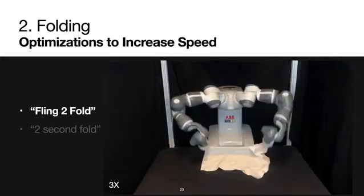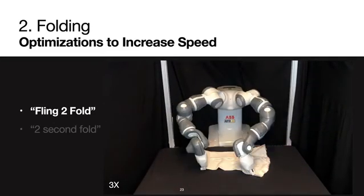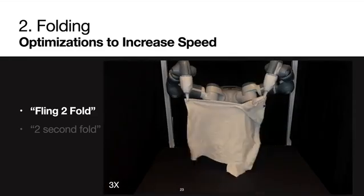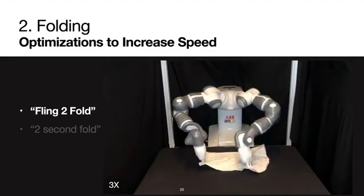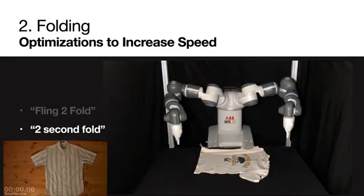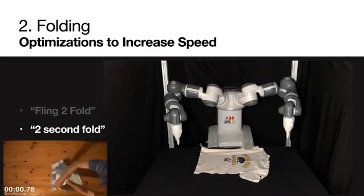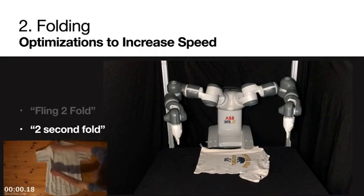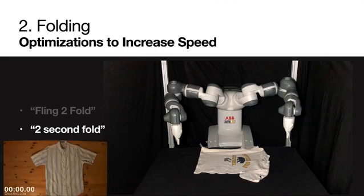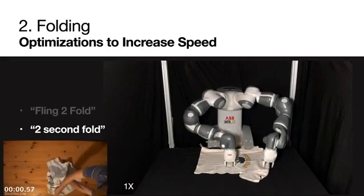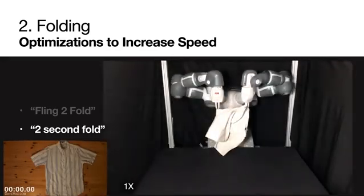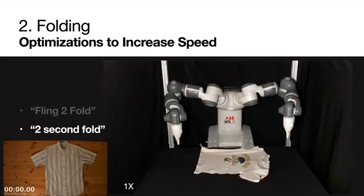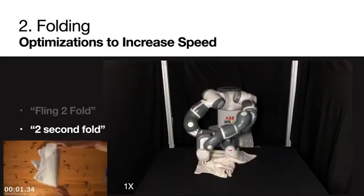As the goal is to increase the folds per hour, we consider two optimizations. The fling to fold combines the fling with the first folding step, reducing one imaging step from the cycle. And we can even remove the sensing steps entirely. The two second fold is an ancient Japanese method to fold t-shirts very quickly. Using this technique, we reduce the folding time compared to the folding lines as it doesn't require taking images between steps at all, but it is less reliable and more prone to errors.